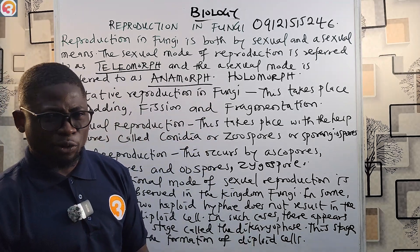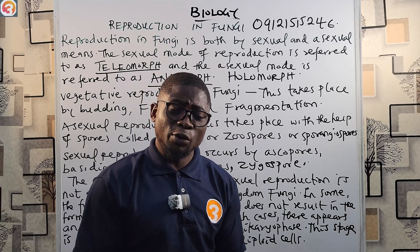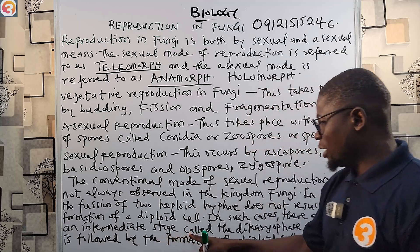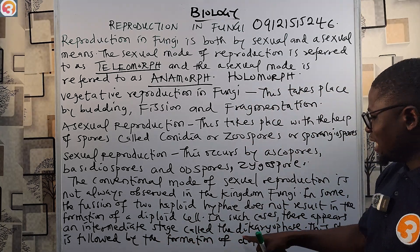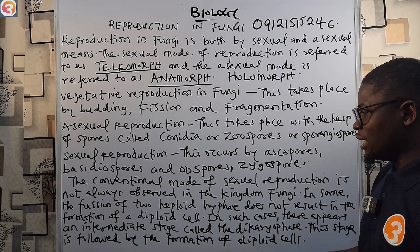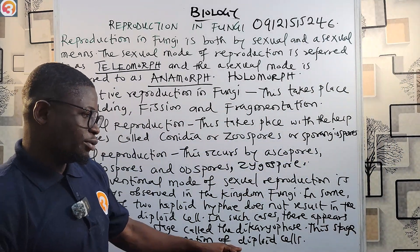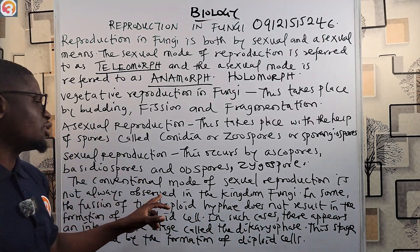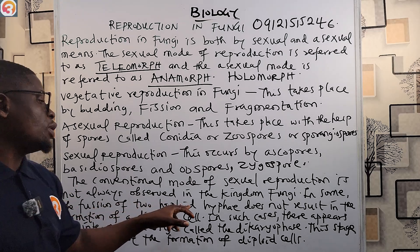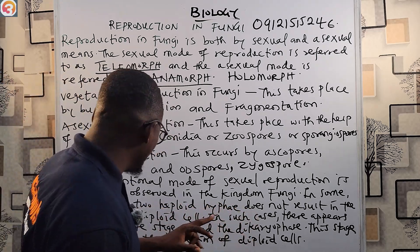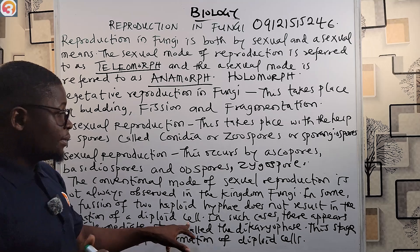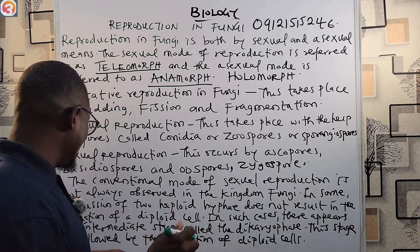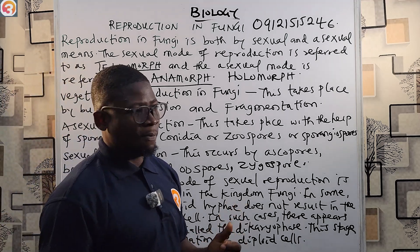However, in some other fungi, when one haploid mycelium meets another haploid mycelium, they do not fuse together immediately. They interact but do not fuse initially — they pass through an intermediate stage called the dikaryophase. After passing through the dikaryophase, they then fuse together and form the diploid cell. This is why the conventional mode of sexual reproduction is not always observed in the kingdom Fungi: in some cases the fusion of two haploid hyphae does not immediately result in a diploid cell, and an intermediate dikaryophase stage appears before the diploid cell is formed.